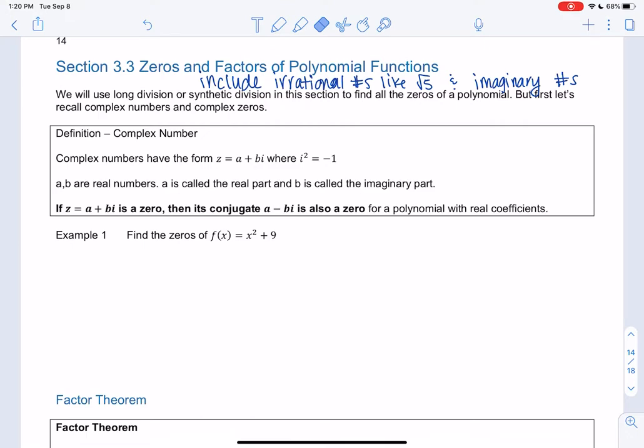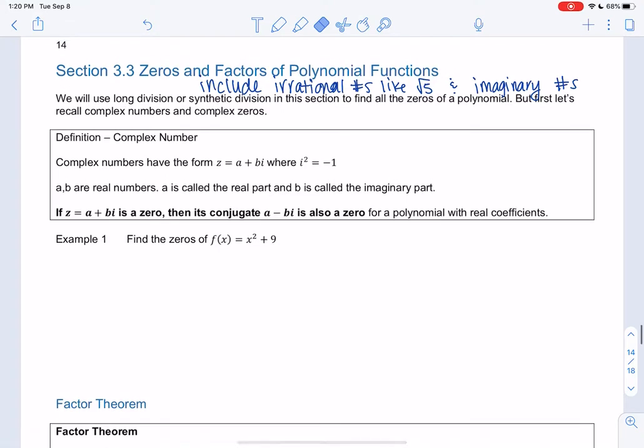So let's review what a complex number is again, just in case it's been a while. Those are numbers with i's in them, right? They look like a plus bi, where i squared is negative 1, or i is the square root of negative 1. And then anytime a plus bi is a 0, then its conjugate is also a 0 when we have a polynomial with real coefficients. So that's helpful. That'll help us find zeros when we get into them.